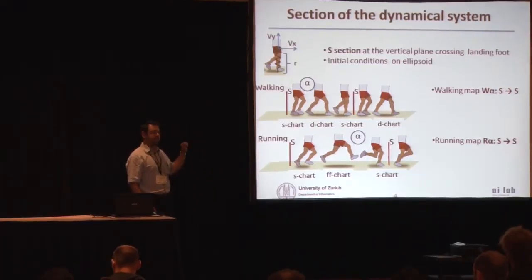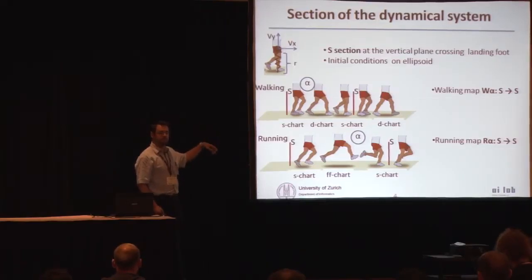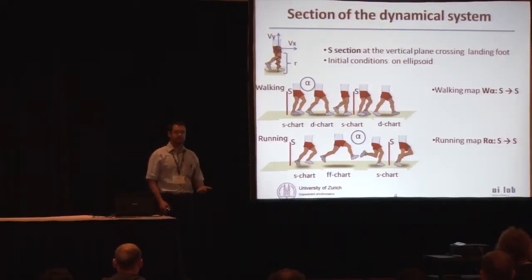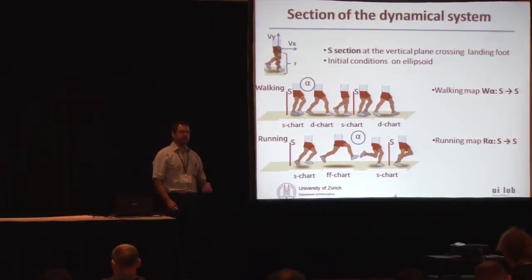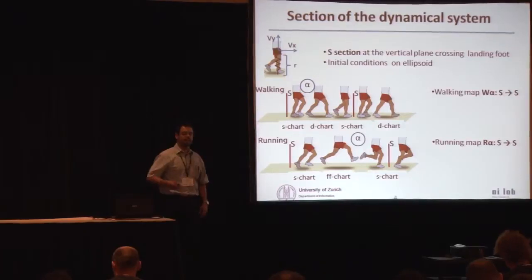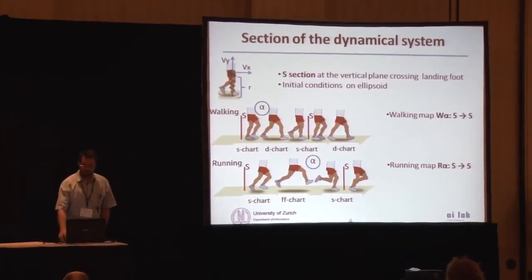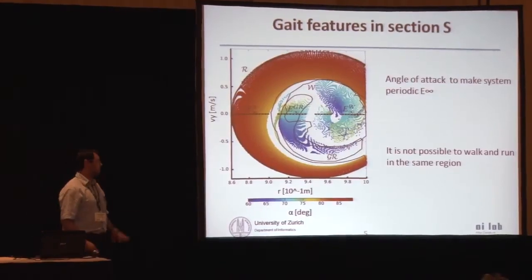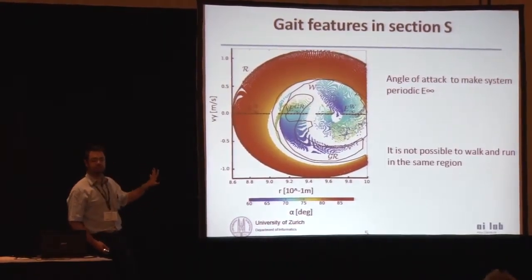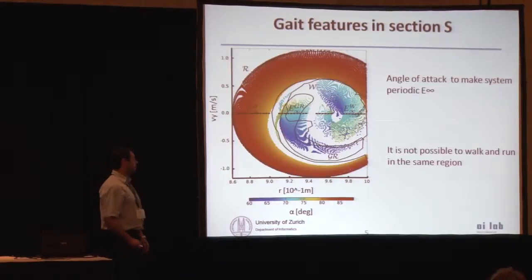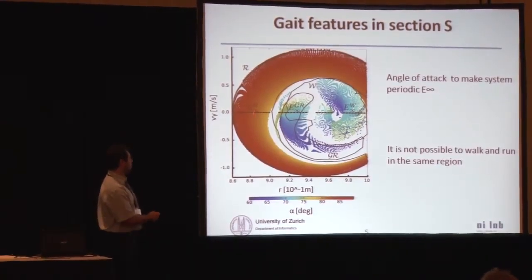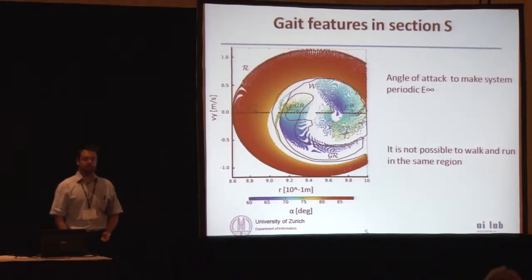So in order to study these systems, basically what I'm going to build are a couple of maps that are mapping the initial conditions from this section to the section. And these maps are defined by the gait that I'm using and the angle of attack. The angle of attack is measured between the ground and the landing leg of the step. So this is how it looks. All the initial conditions are going to be in this ellipsoid, and you can see that here, where you have these red dots, the system can perform the running behavior. And here where you have the blue dots, the system can perform a walking behavior.